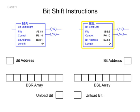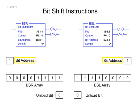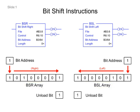The BitShiftLeft and BitShiftRight instructions load data into a bit array one bit at a time. The data is shifted through the array and unloaded one bit at a time.